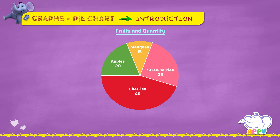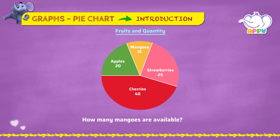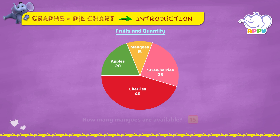Let's look at the pie chart and answer a few questions. How many apples are available? To know the quantity of apples, we see the number for apples, so there are 20 apples. How many mangoes are available? To know the quantity of mangoes, we see the number for mangoes, so there are 15 mangoes. Which is the maximum number of fruit available? We see that the largest sector corresponds to cherries, which is 40.